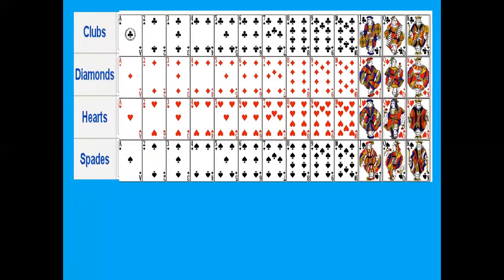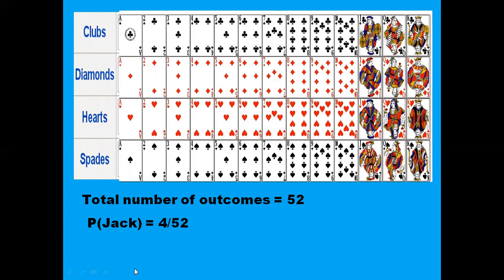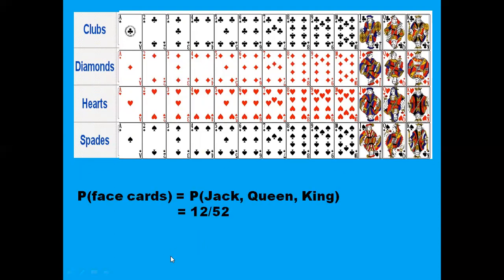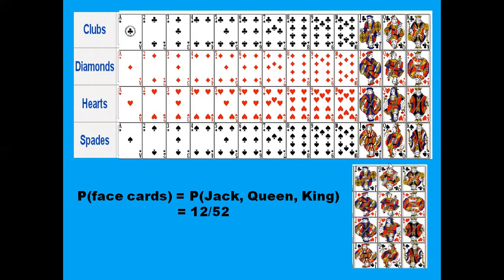Now let us solve some problems. Total number of cards is 52. Probability of getting a jack — we have jack of clubs, jack of diamond, jack of heart, and jack of spade — so there are four possible outcomes for getting a jack. So it is 4/52. Now probability of getting face cards: face cards are jack, queen, and king. There are 4 jacks, 4 queens, 4 kings — so 4 × 3 = 12. So probability is 12/52.